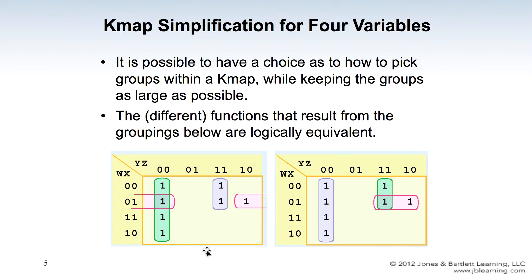With the second approach, the simplified boolean function can also be represented by three minterms. The first could be Y-not Z-not, the second W-not YZ, and the third W-not X Y — since Z changes, Z is dropped. Alternatively, the last minterm could be W-not X Z-not, where Y changes and is dropped, Z is kept as Z-not. These last minterms differ between approaches but the functions are equivalent.